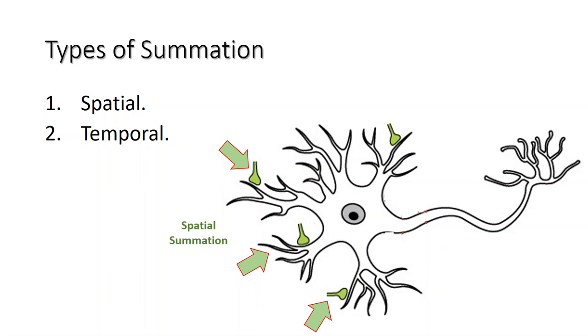Temporal summation is associating multiple action potentials from a single cell, meaning it can be the result of multiple graded potentials at the same place but separated in time. Spatial and temporal summation can act together as well.